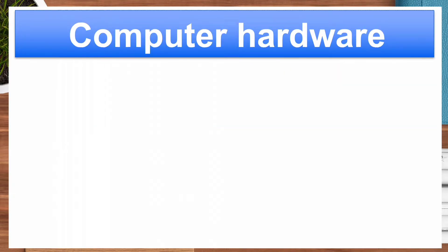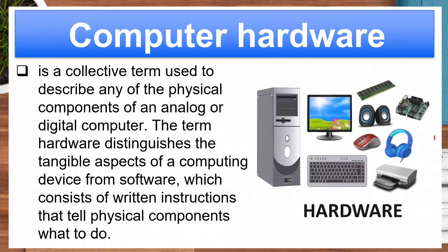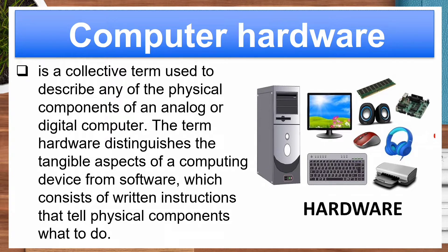Computer hardware is a collective term used to describe any of the physical components of an analog or digital computer. The term hardware distinguishes the tangible aspects of a computing device from software, which consists of written instructions that tell physical components what to do.